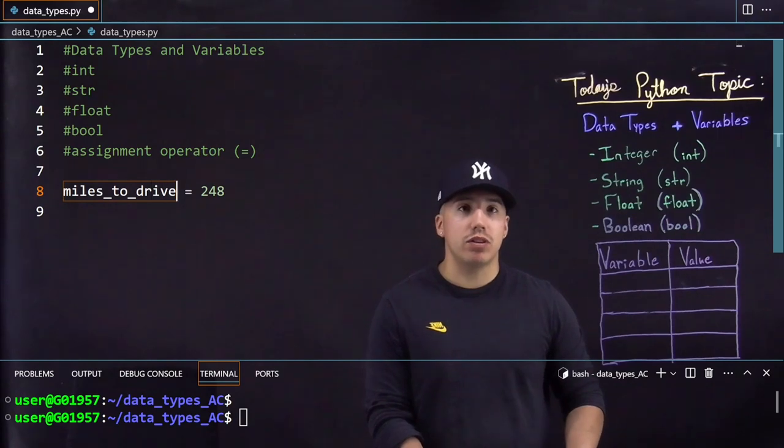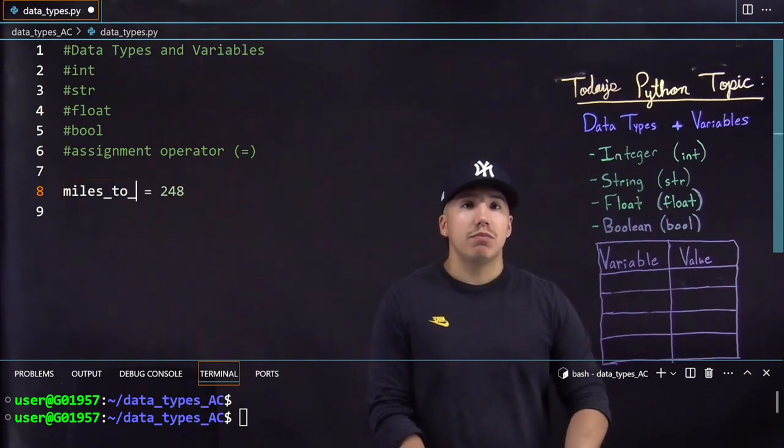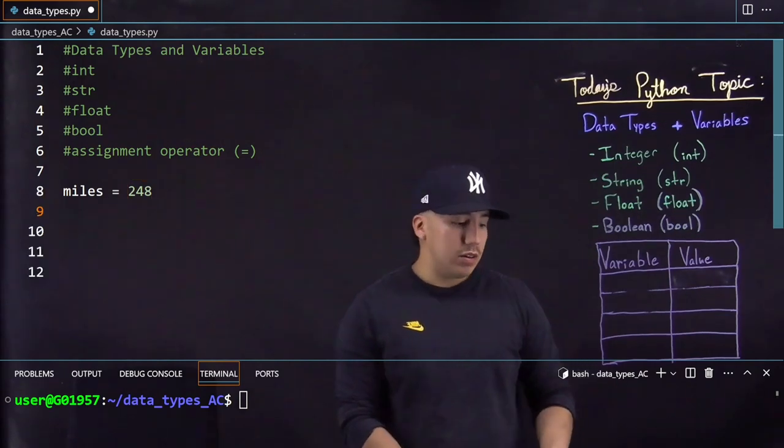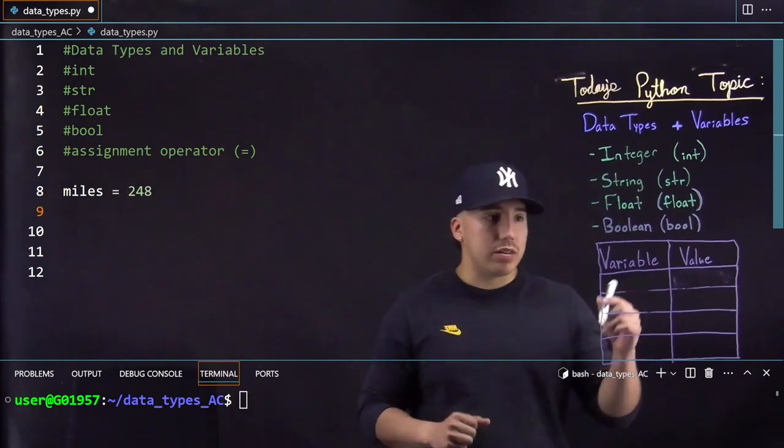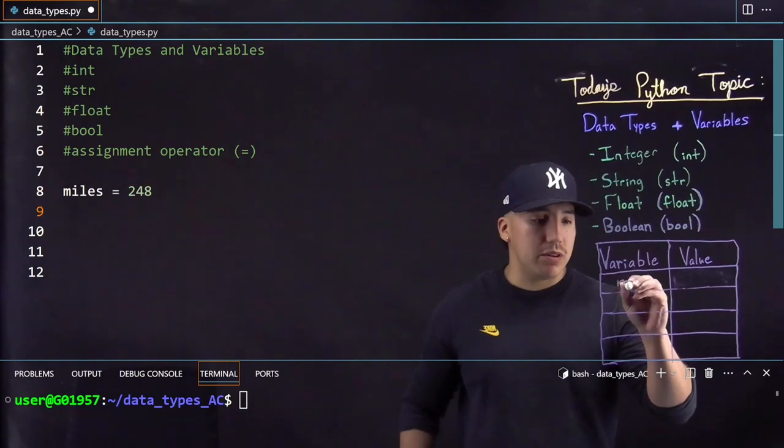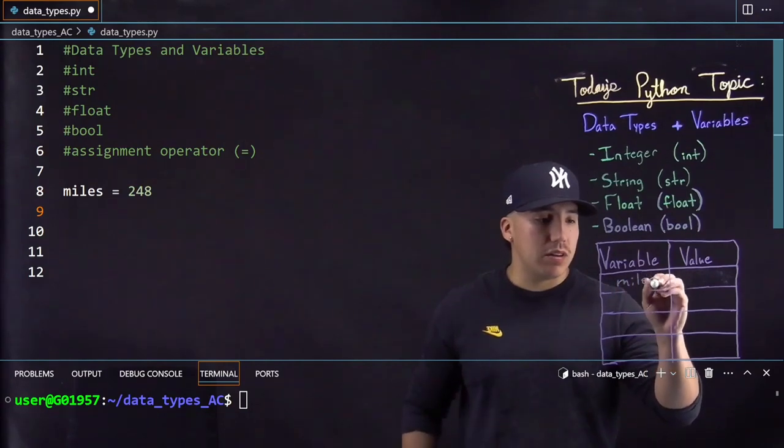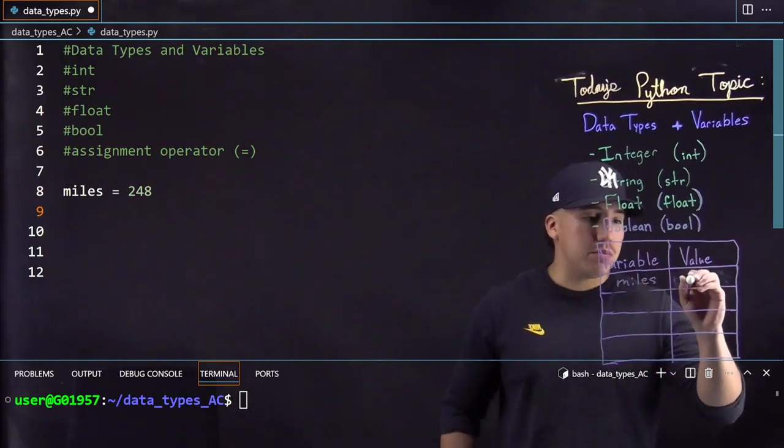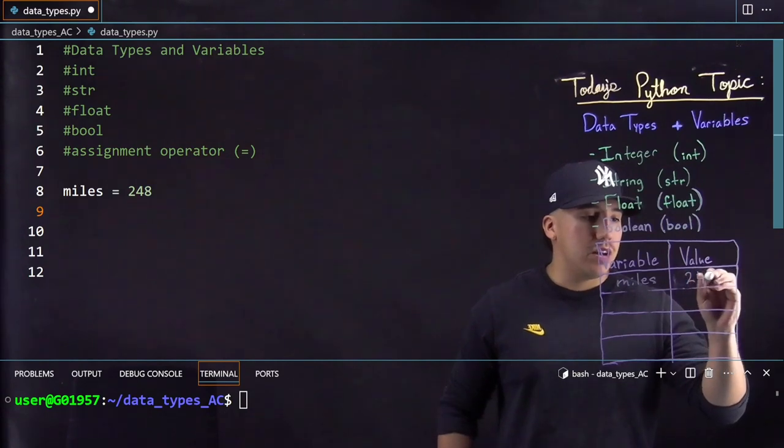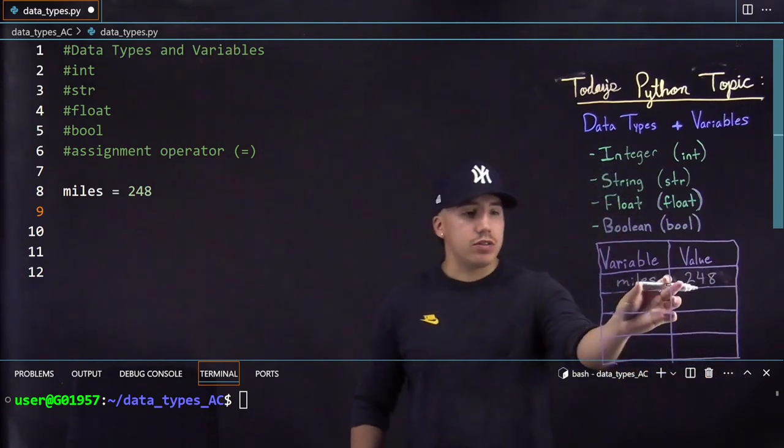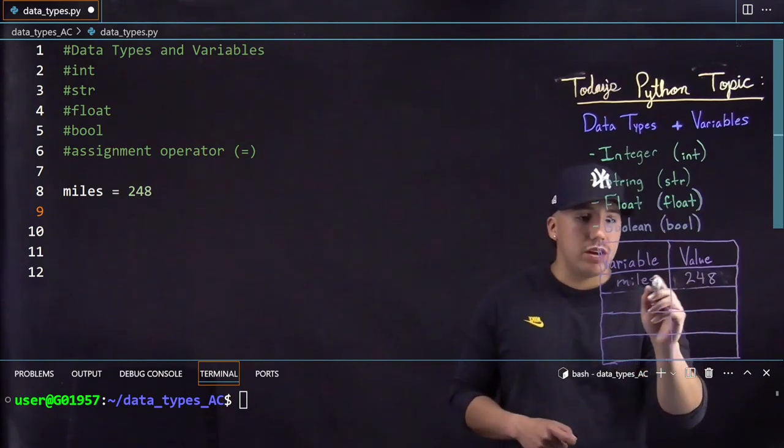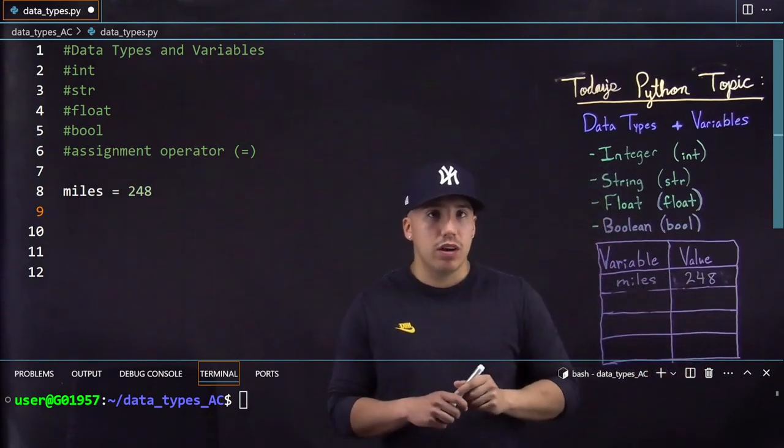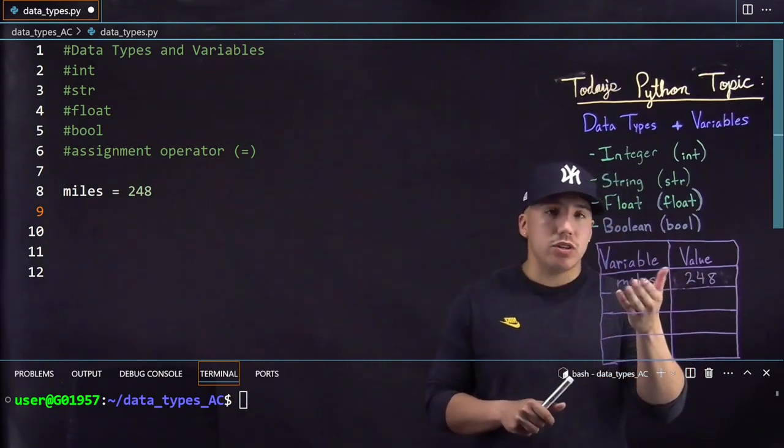I'm gonna keep it very simple. I'm gonna put miles. So after I declared this, basically what ends up happening is now we have a variable that we made called miles. Yeah miles and I put 248. So now that is that value. So anywhere in this program we have something miles and it's equal to 248. So these are equal to each other. So basically you've made miles an integer.